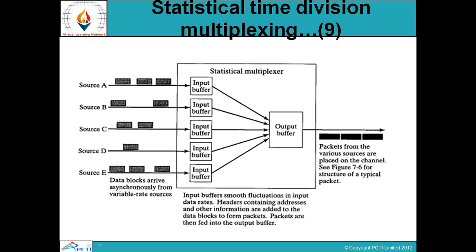This is a pictorial representation of statistical time division multiplexing. We have different sources — Source A, Source B, Source C, Source D, and Source E. These are data blocks that arrive asynchronously from variable rate sources. This is the statistical multiplexer. We have a buffer for each source and an output buffer. The input buffer smooths fluctuations in input data rates. After that, the output is a single common signal where packets from the various sources are placed on the channel, combining different signals into a single signal.